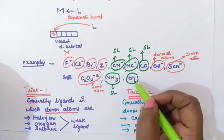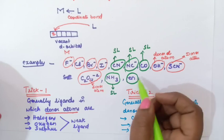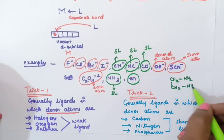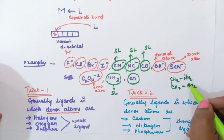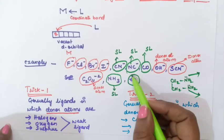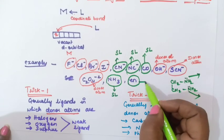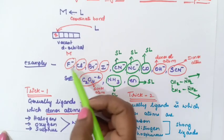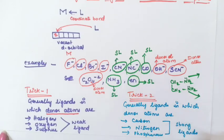For ammonia (NH₃), nitrogen is the donor atom, so it is a strong ligand. For ethylenediamine (en), the structure is NH₂-CH₂-CH₂-NH₂, and the lone pair on nitrogen means nitrogen is the donor atom, so ethylenediamine is also a strong ligand. Using this trick we can easily identify strong and weak field ligands. Red color marks weak ligands and green color marks strong ligands. I hope you liked the trick — share it with your friends and subscribe to the channel. Bye-bye!